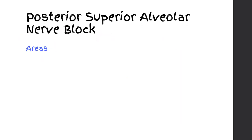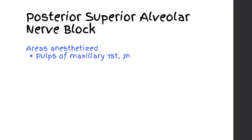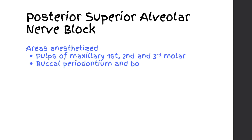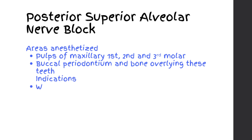Posterior Superior Alveolar Nerve Block. Areas anesthetized: pulps of maxillary first, second, and third molars; buccal periodontium and bone overlying these teeth.